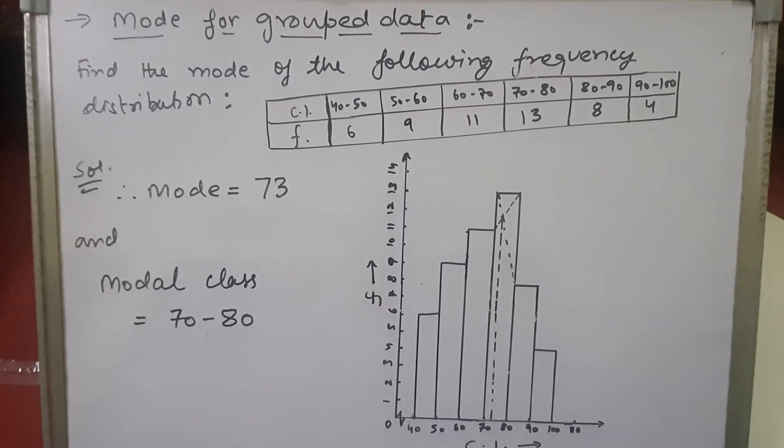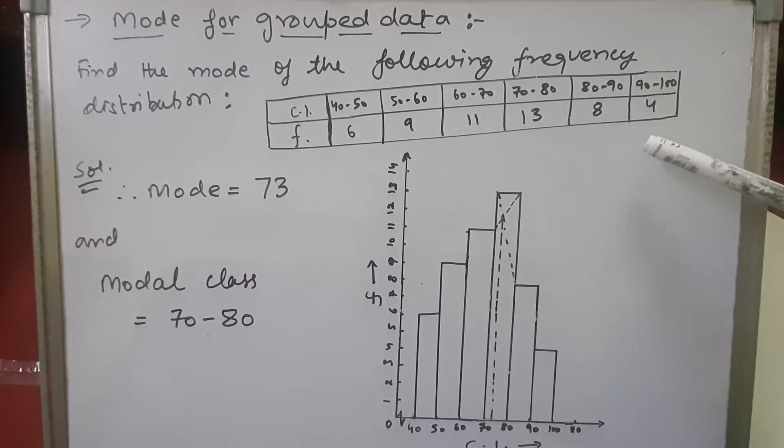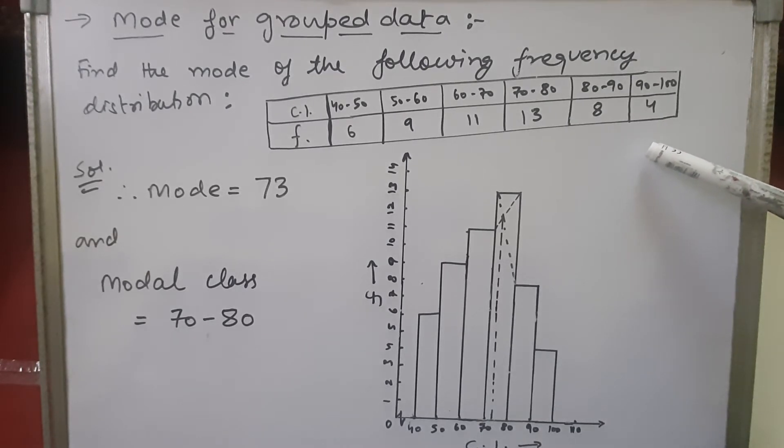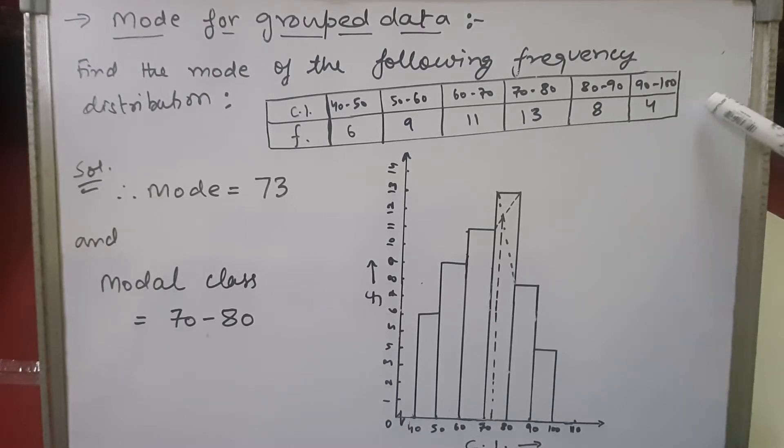Next we'll be calculating the mode of the grouped data. Here it is a continuous grouped data. If it's not continuous, then first what we'll do is make this data into continuous grouped data. Now the question says: find the mode of the following frequency distribution. Class interval is given 40 to 50, 50 to 60, and so on up to 100.